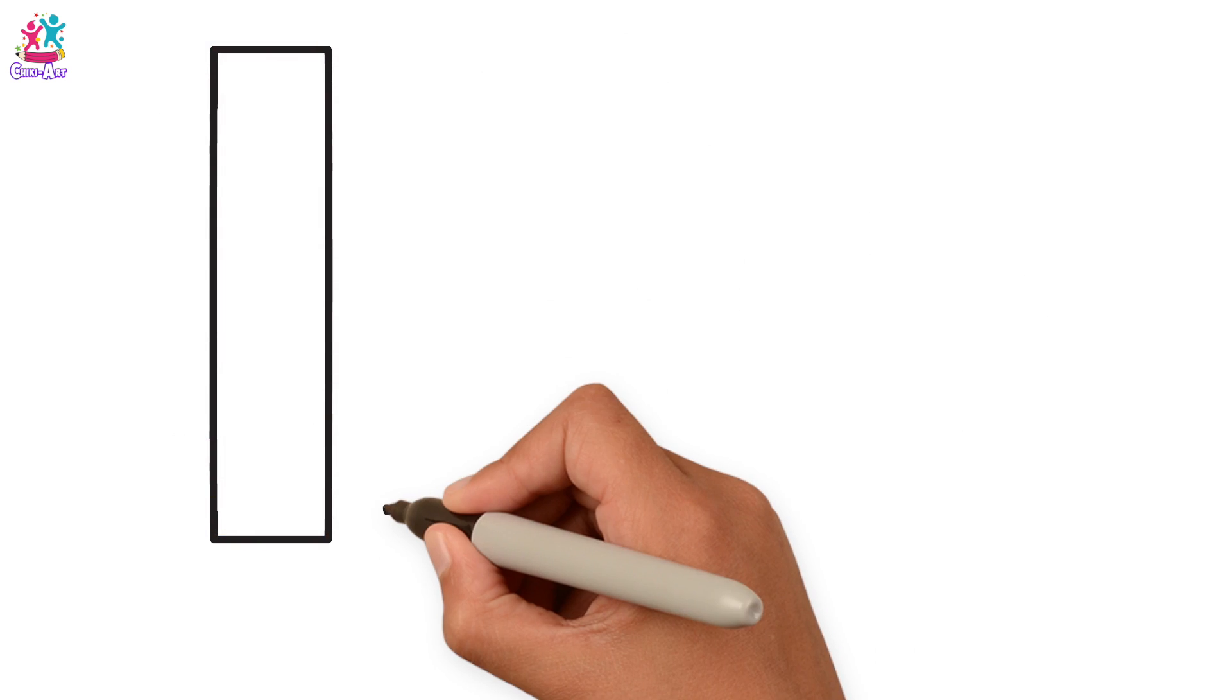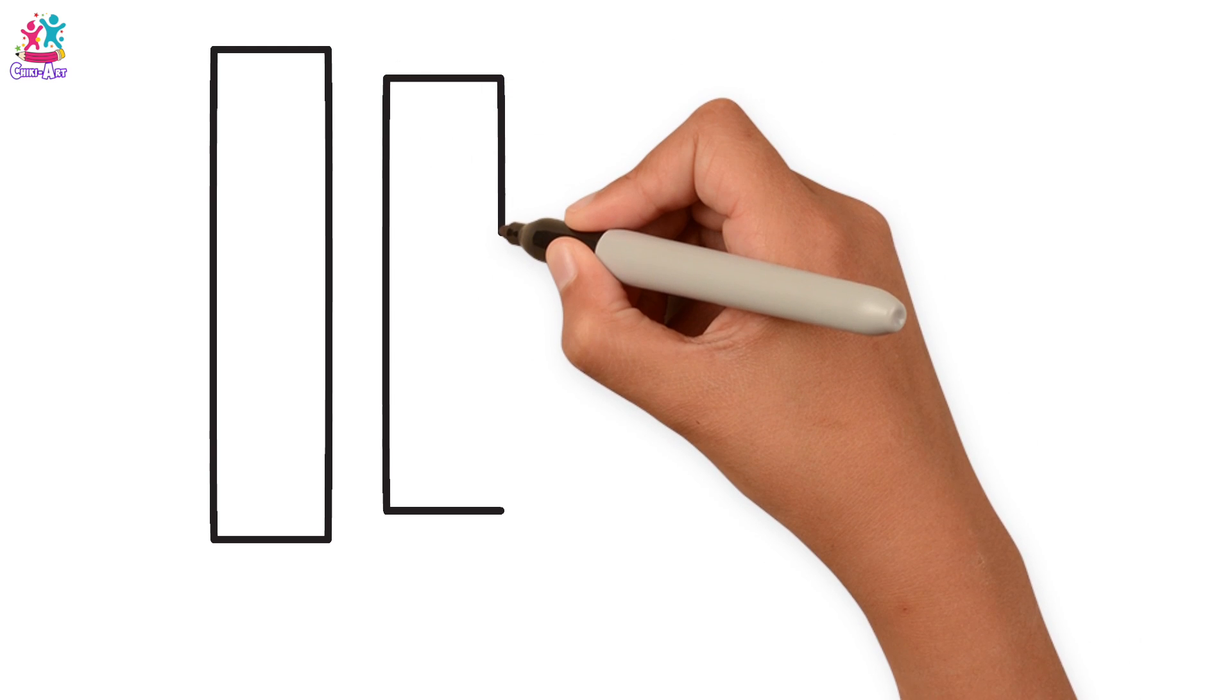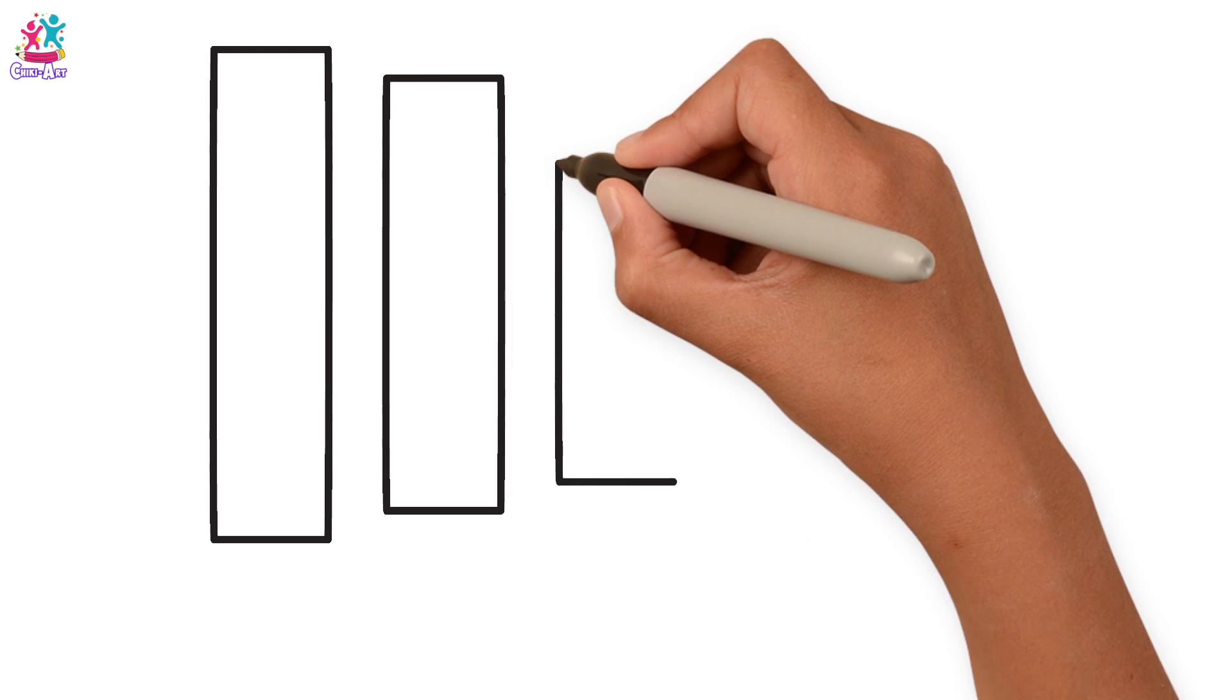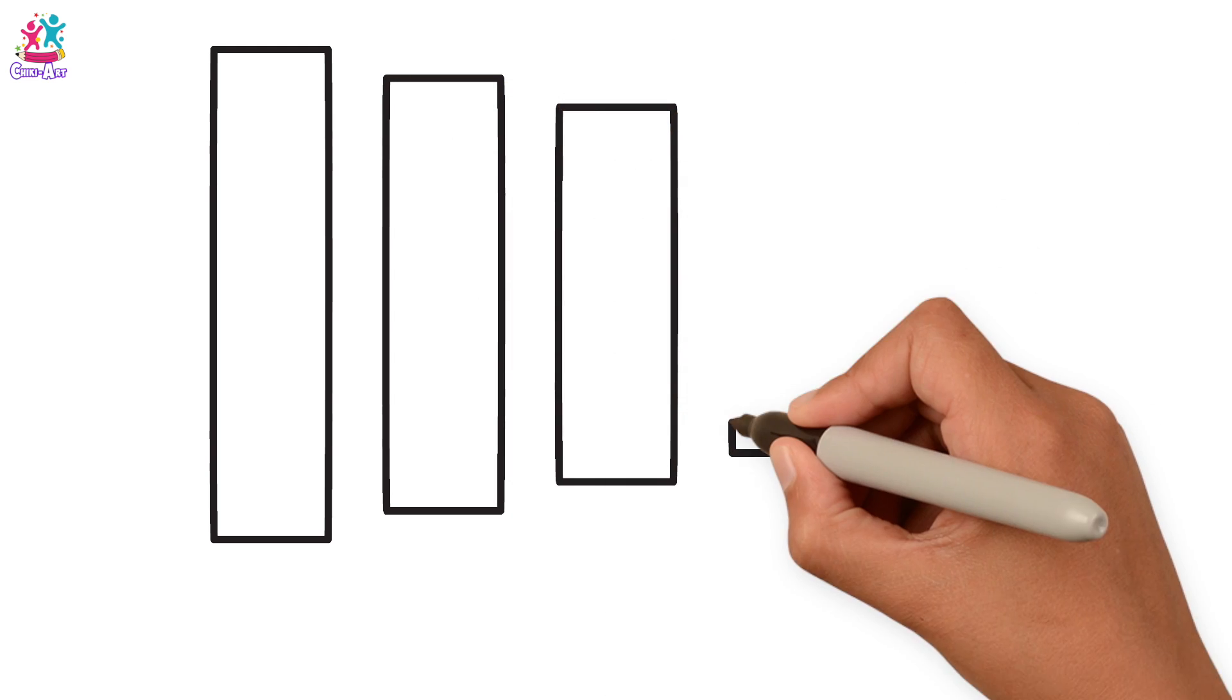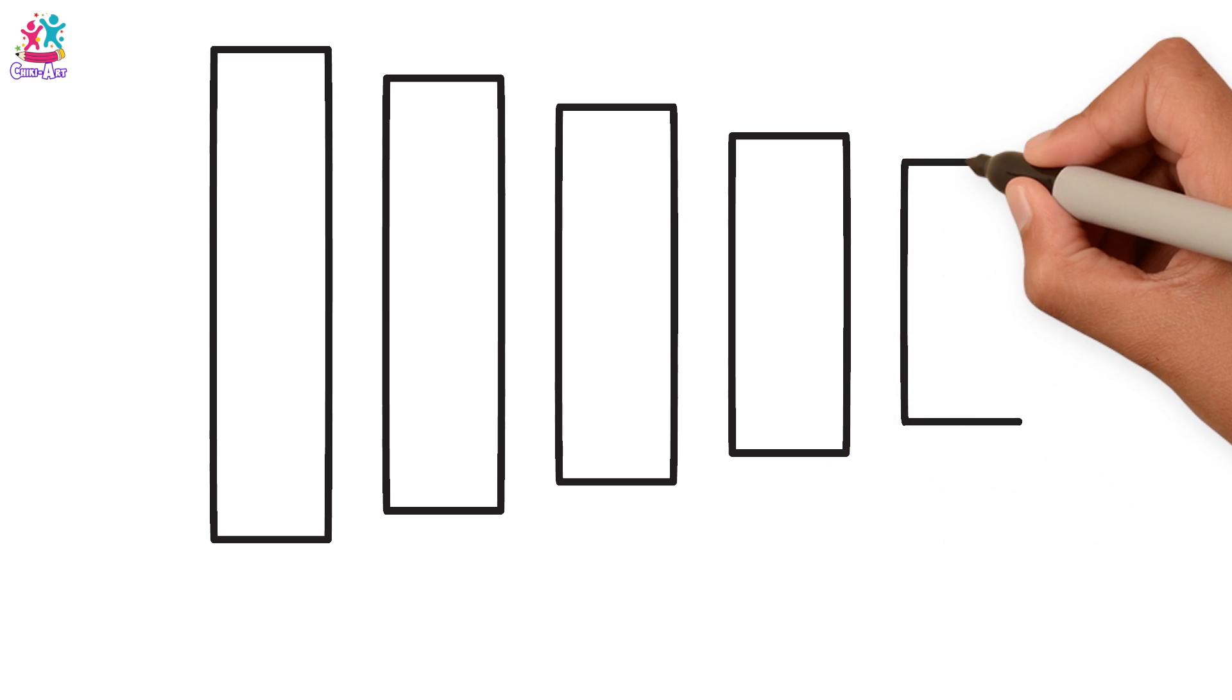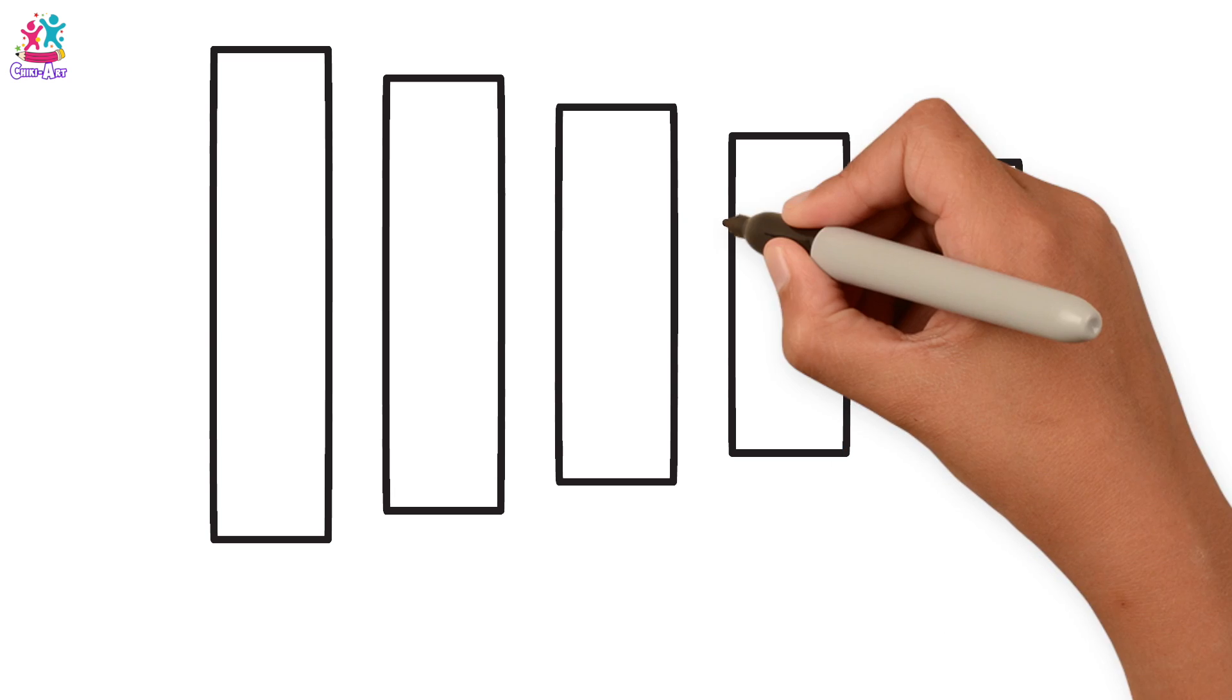You start by drawing lots of rectangles, that's right. A rectangle is where you've got two long sides and two short sides. Now in this picture each rectangle is going to be slightly shorter than the previous one.